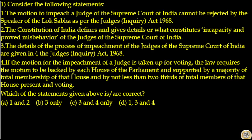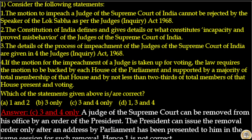Statement 4: If the motion for the impeachment of a judge is taken up for voting, the law requires the motion to be backed by each house of Parliament and supported by a majority of total membership of that house and by no less than two-thirds of total members of that house present and voting. That is correct. The answer to this question is option C — statements 3 and 4 are correct, and statements 1 and 2 are incorrect.